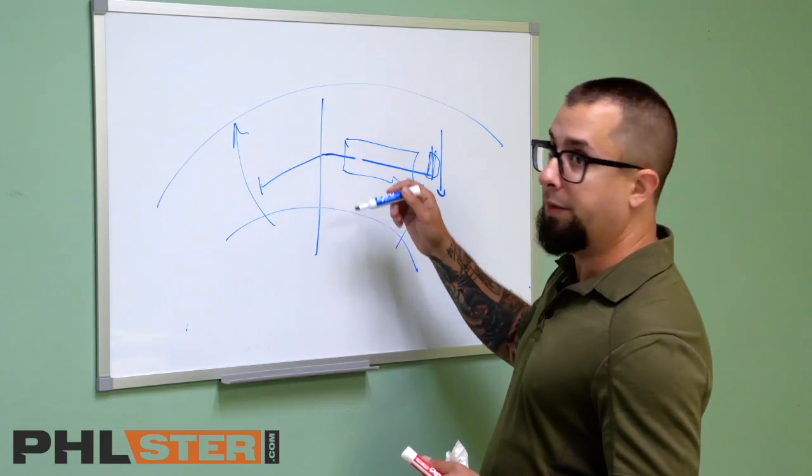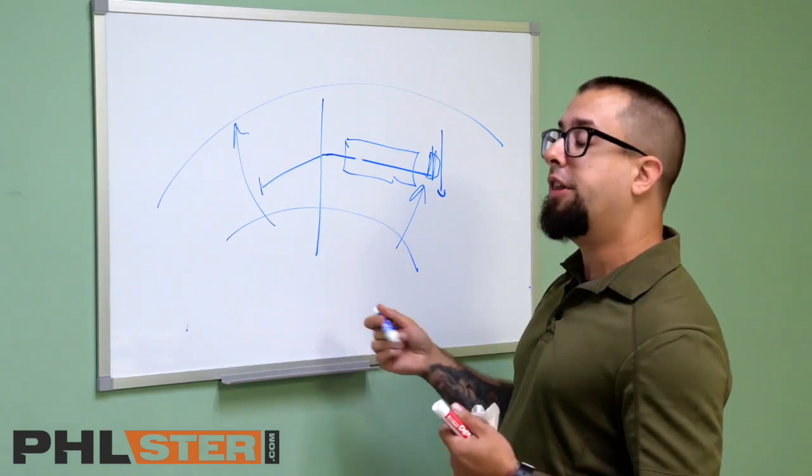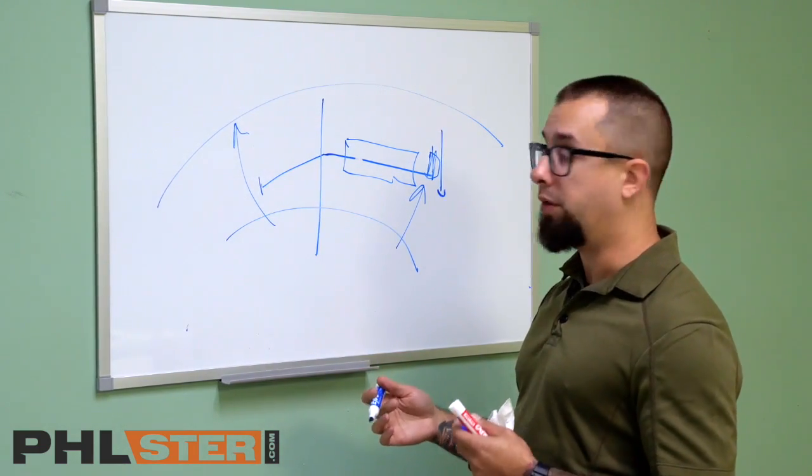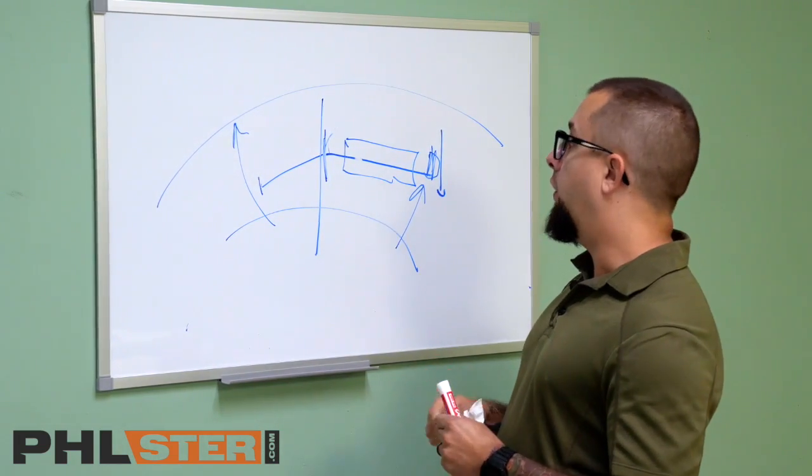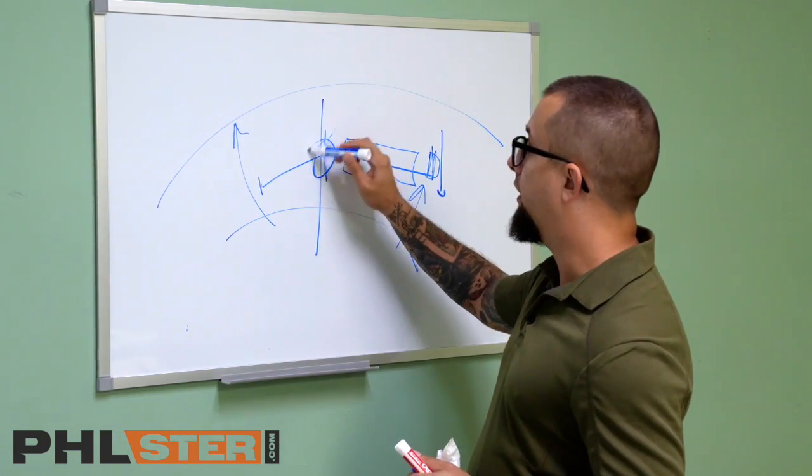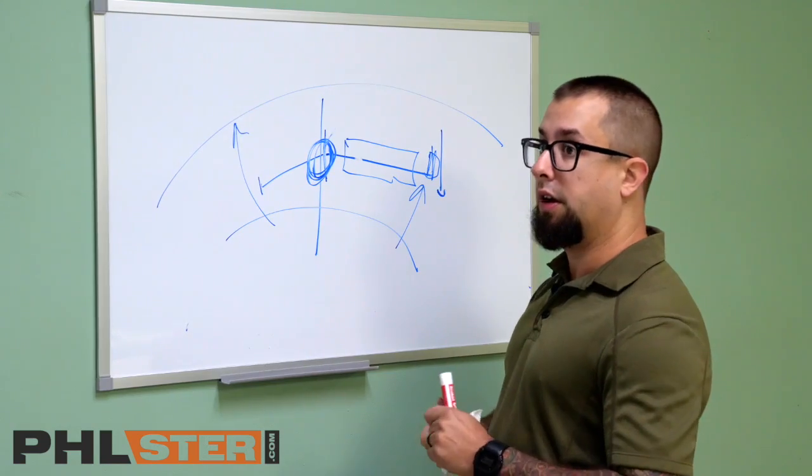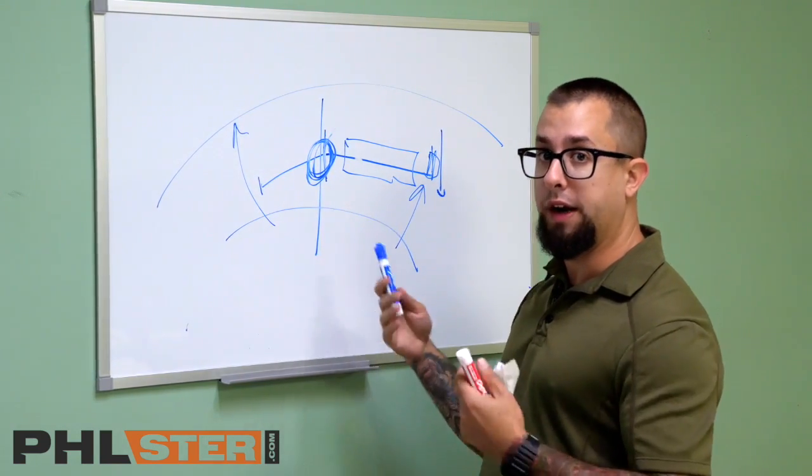And then what happens, of course, is that since Kydex isn't really designed to do this and everything we make out of Kydex as holster makers is pushing the limits of what the material is designed for, they break here. So the only way for these to work is for this portion here to be as flexible as possible, so you don't have the physics of the device working against themselves.